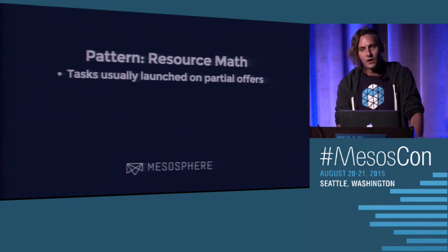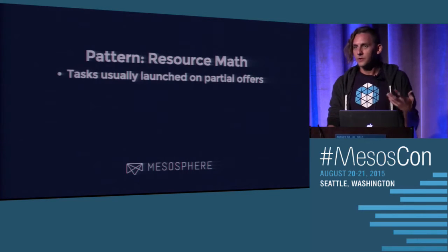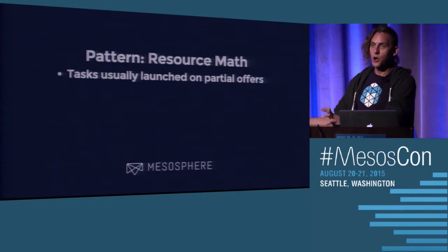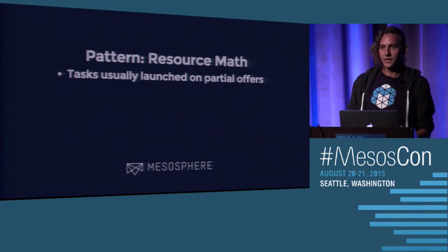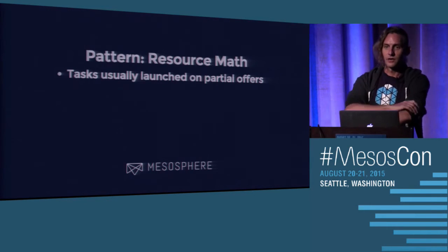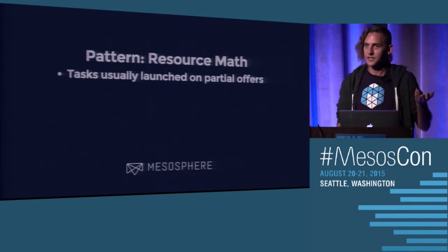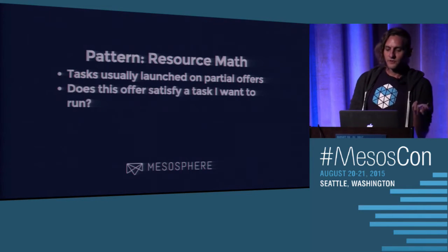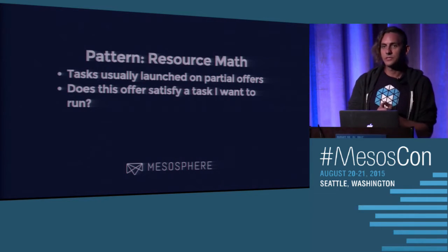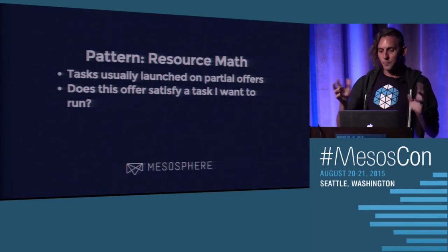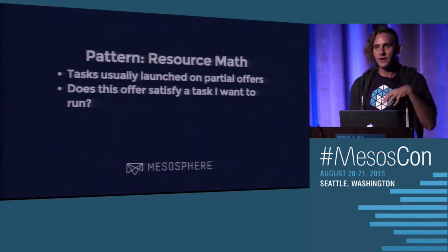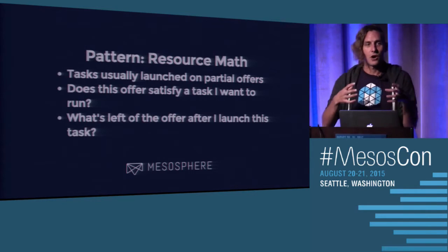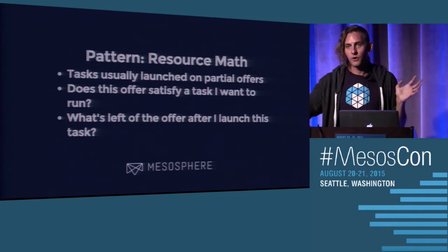Let's talk about a few common patterns. Resource math: Mesos may offer you 10 gigs of RAM, but you want to launch a task that only uses two. It's up to you to take the resource offer, know how much you want for your task, and launch using only that subset. If you claim the entire offer, nobody else can use those resources. You can even launch multiple tasks on the same offer if they all fit.